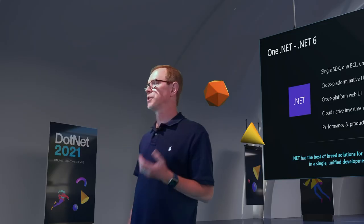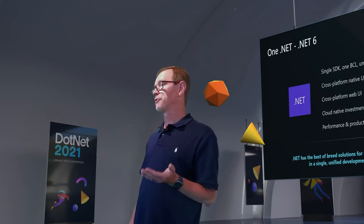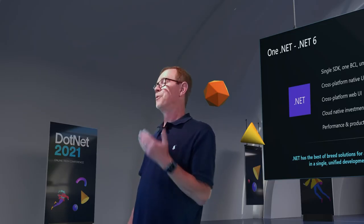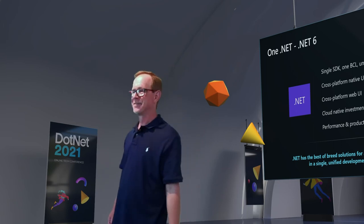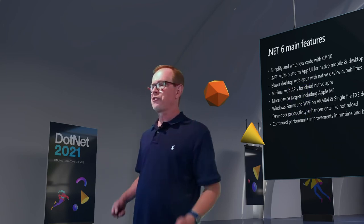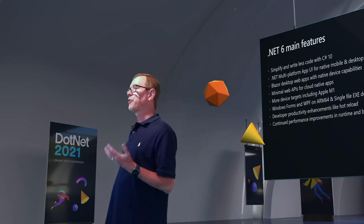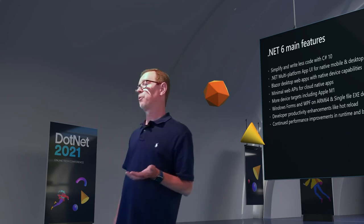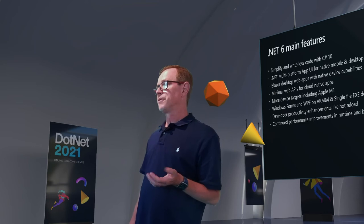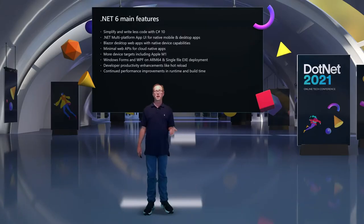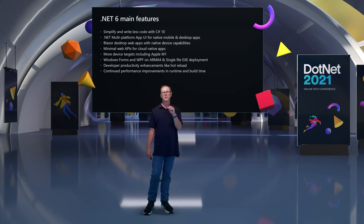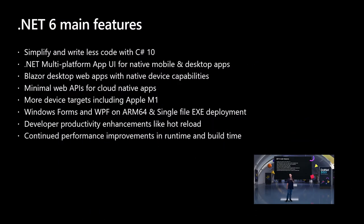That's our vision with .NET 6, which we will ship this November. One of the things we want to do is simplify the way you build apps with C#. We introduced some of these things in .NET 5 with top-level programs, which means you can get rid of the program class and the main inside of that. You can just write code and get right there.